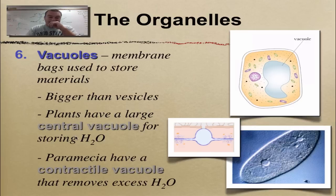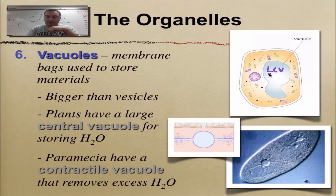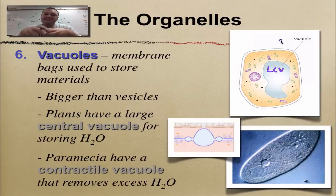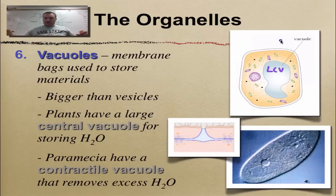Plants are unique — they have what is called a large central vacuole, or LCV, and it contains water. It does two things: the water is required for photosynthesis, and when that vacuole is full of water it pushes up against the cell wall, which is what makes a plant cell stand up nice and stiff.